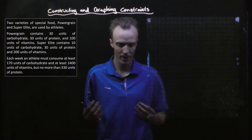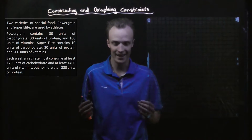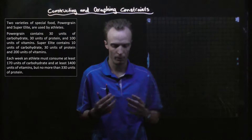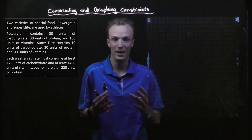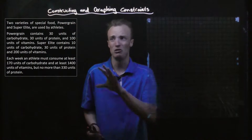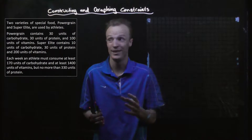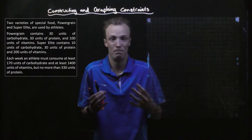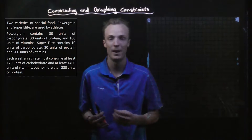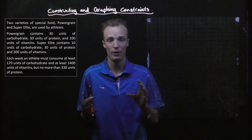Now my dietary requirements might be to have at least 1,400 units of vitamins. But I might be restricted on the number of protein that I can have, and I might not be allowed to have any more than 330 units of protein. Now that's a lot of information, and if we were to try and start constructing constraints straight from this, it's possible but it's very difficult. So we need a way to visualize or represent our information. And a table can be very useful for that.